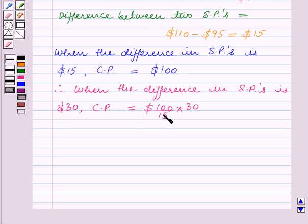Now $15 two times is $30, so this is equal to $200. So the cost price is equal to $200 and this is the final answer.